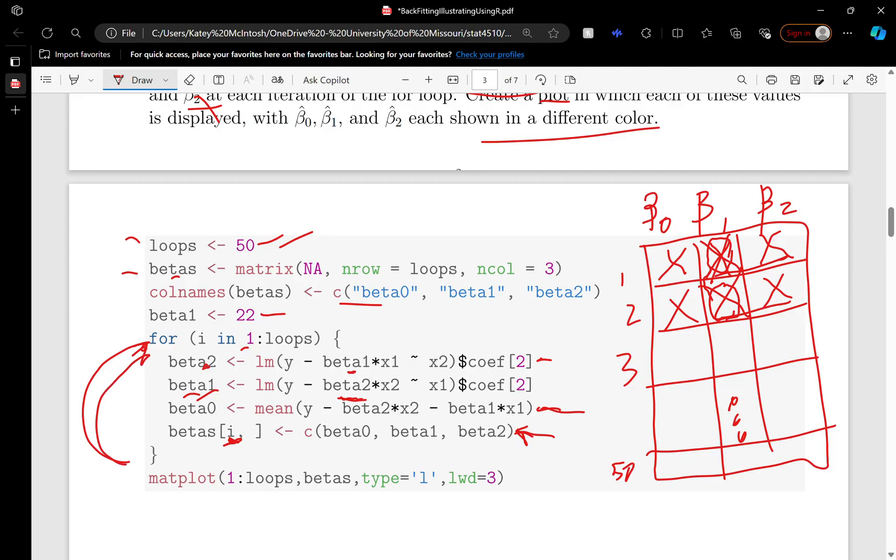Then we repeat. We go to the third iteration. It carries this estimate down, estimates this, estimates that, estimates that, and it just repeats 50 times.